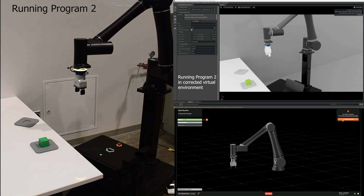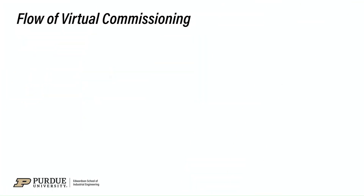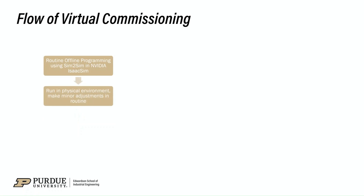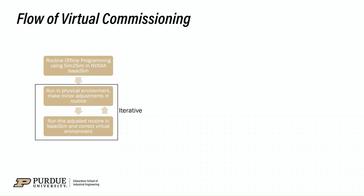The program works as expected. This concludes that both our real and virtual environments are synchronized. To summarize: first, we programmed the Cobot offline using the digital twin without the physical Cobot. We then ran this virtually programmed routine on the live Cobot and tweaked it slightly for precision. After this, we modified our virtual environment by running the tweaked routine. The process is iterative until the virtual environment matches the real one. Using the snap and pivot tool to accurately position objects will reduce the number of iterations.